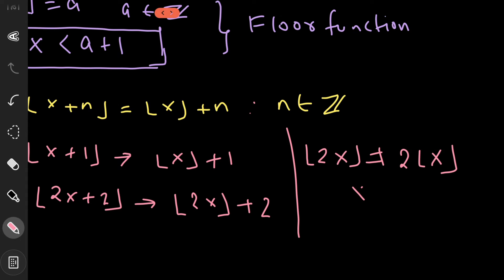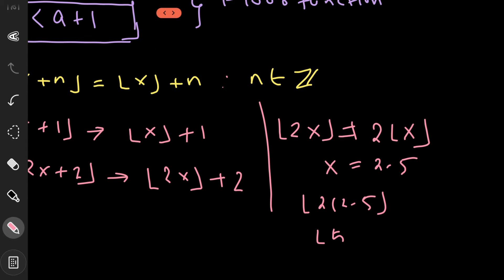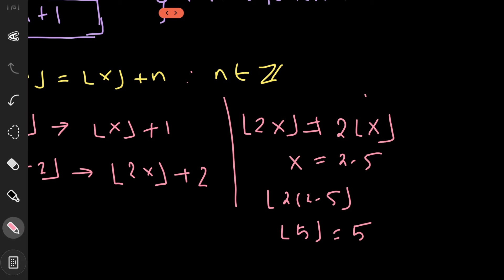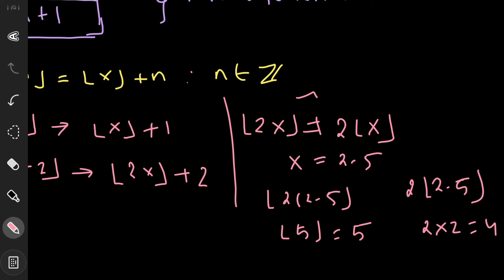To see why floor(2x) ≠ 2·floor(x), suppose x = 2.5. Then floor(2 × 2.5) = floor(5) = 5. But 2 × floor(2.5) = 2 × 2 = 4. So these two are clearly not equal.